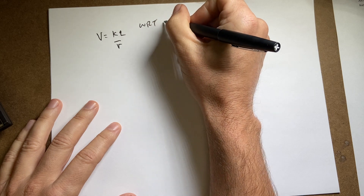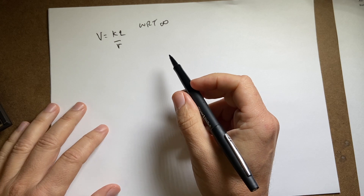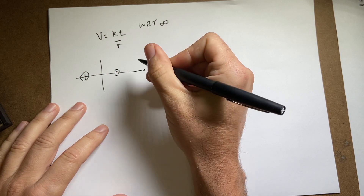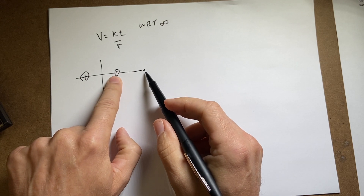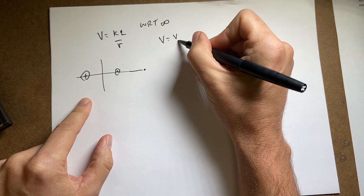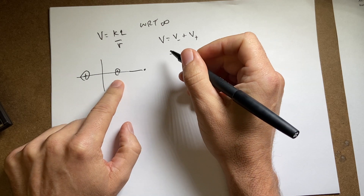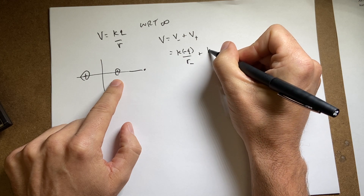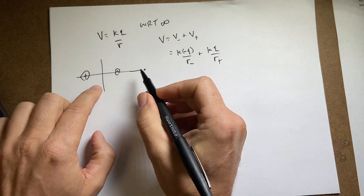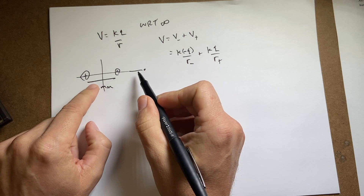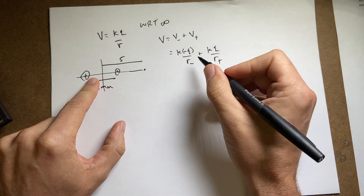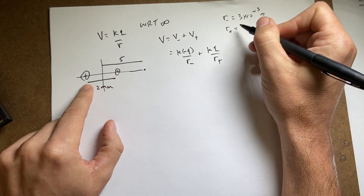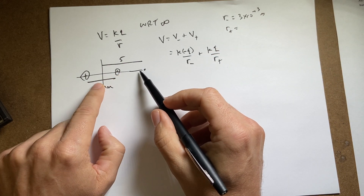The potential at the point is the sum of the potential from each charge: V equals V_minus plus V_plus, which is K times negative Q over R_minus, plus K times positive Q over R_plus. Looking at the geometry, this point is 2 millimeters and 5 millimeters from reference points. R_minus is 3 times 10 to the negative 3 meters, and R_plus is 6 millimeters.